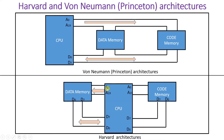Data memory takes addresses and executes data bi-directionally. Code memory is ROM where we store a fixed program — it takes addresses and gives data to the CPU in a unidirectional manner. Data memory is RAM or erasable programmable ROM, so its data flow is bidirectional.